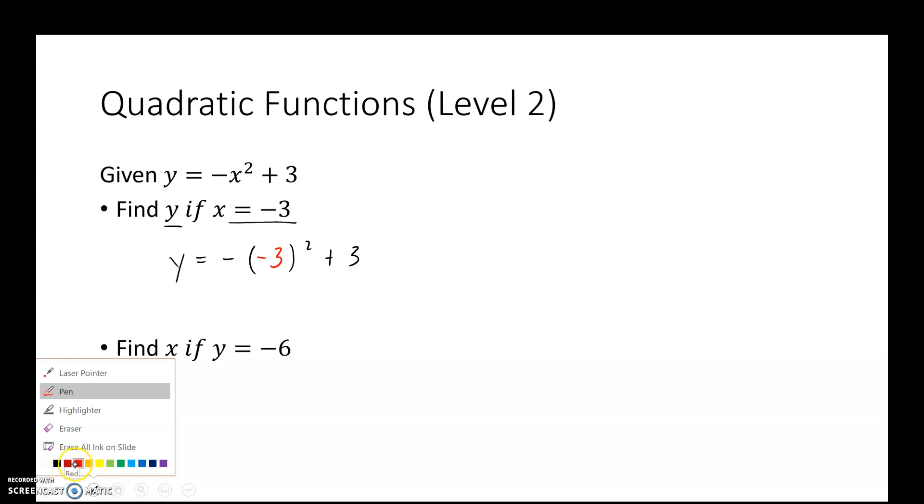I chose this one because the order is incredibly important. This negative sign does not get multiplied by this negative 3. Remember our order of operations. So I have to take care of my exponent. Negative 3 squared is positive 9. This negative out front means I take that positive 9 and multiply it by negative 1. So my final answer would be negative 6.